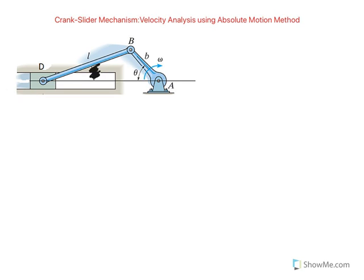I want to get an expression for the speed of D in terms of angle theta and B and L. So how do we do this?